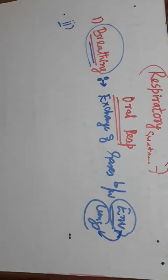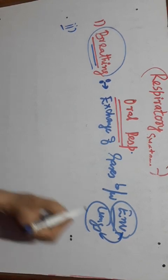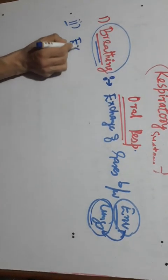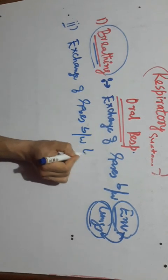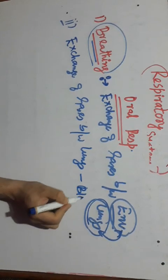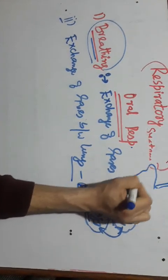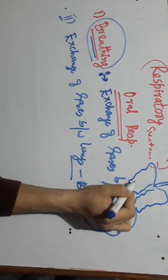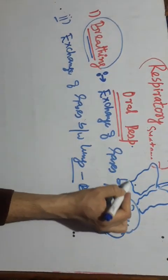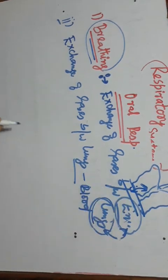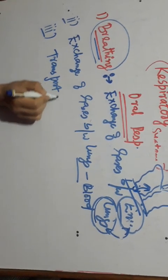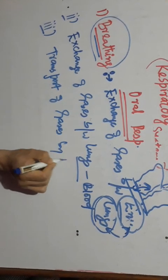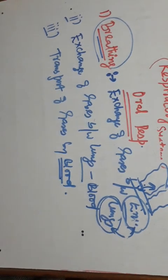The second phase in pulmonary respiration is the exchange of gases between the lungs and the blood. Gases from the lungs diffuse into the blood. The third phase is the transport of gases by the blood to various body parts.